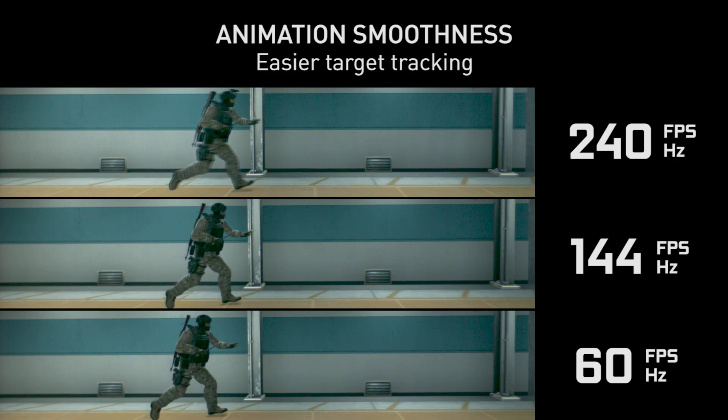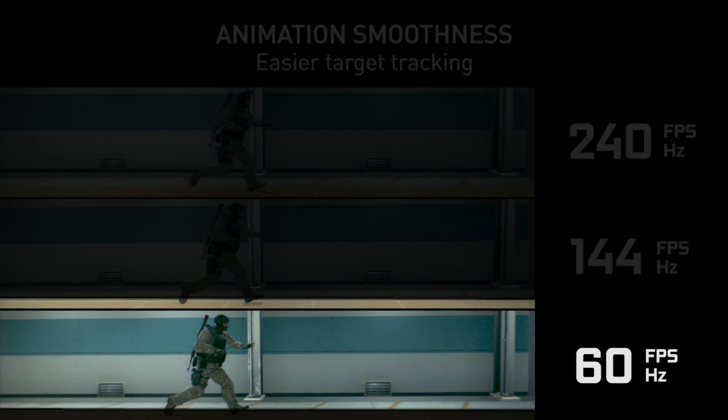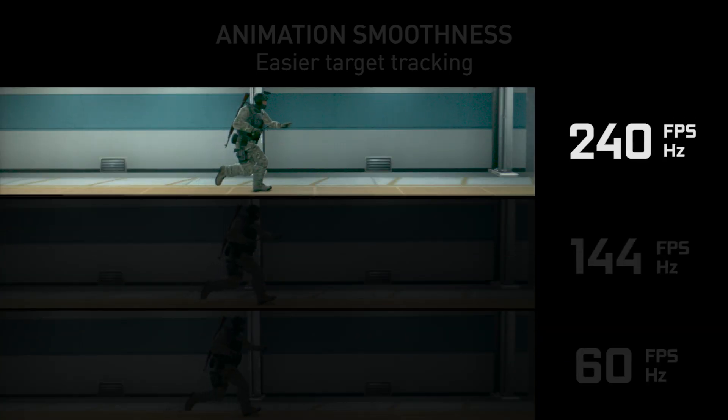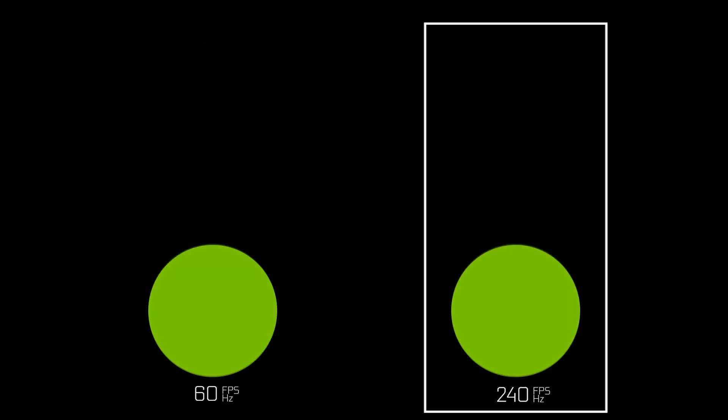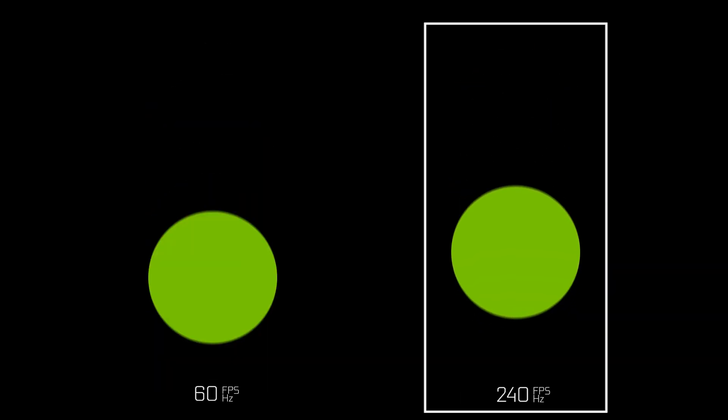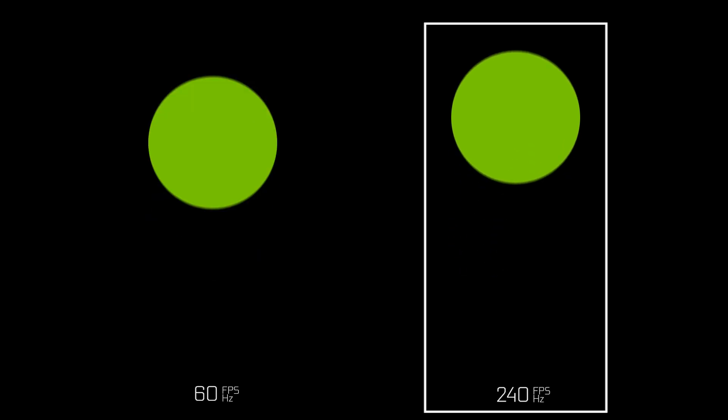One of the first topics is animation smoothness. A great difference between 60 frames per second and 240 frames per second is the smoothness of the animation, because the rates of animation updates happen at different frequencies. At 60 fps, updates happen once every 60th of a second, so steps are larger. At 240 fps, updates happen four times as frequently, so animation steps are smaller and the animation feels much smoother.